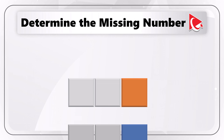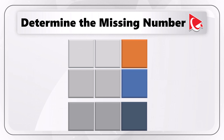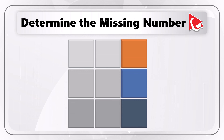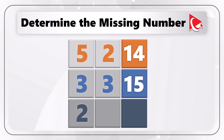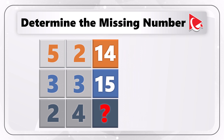You're presented with a 3×3 matrix. The matrix has numbers 5, 2, 14 in the first row; 3, 3, and 15 in the second row; and 2, 4, and then comes the missing number, which you need to calculate and select out of 4 possible choices.